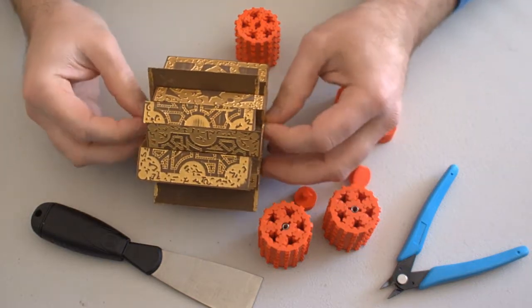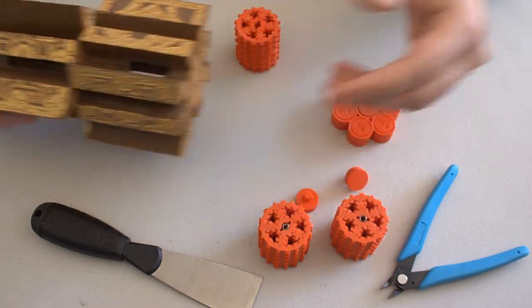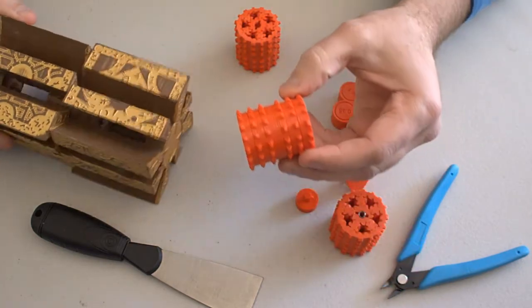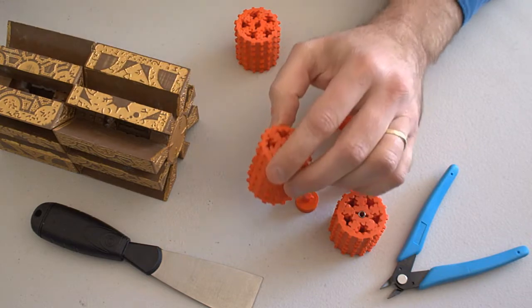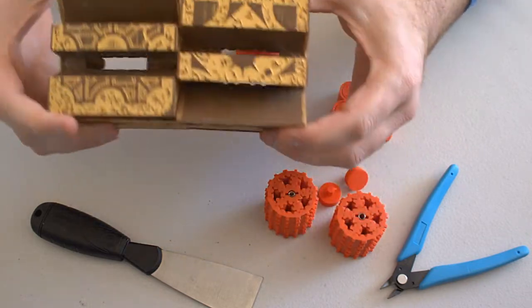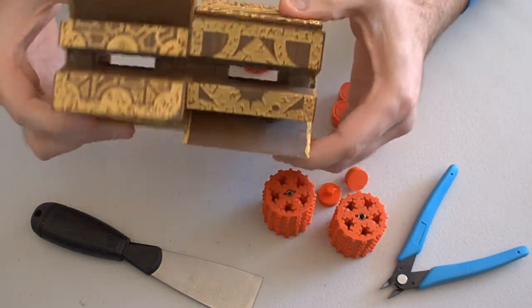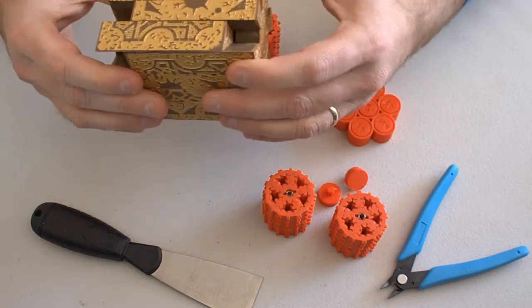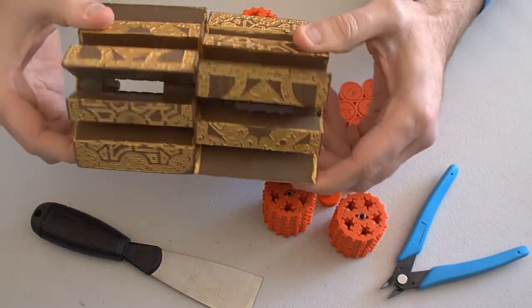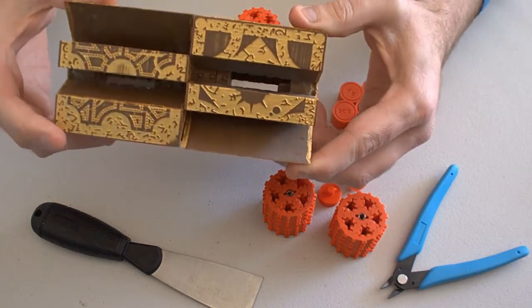The core sits in the middle and has these teeth which align with tracks in each half of the box allowing it to move and turn. As to how to get it in there, see my previous video.